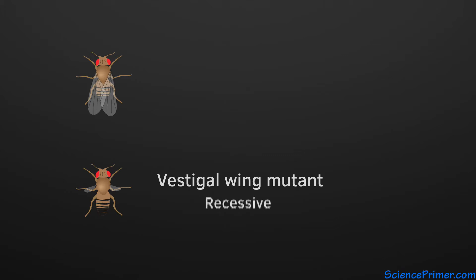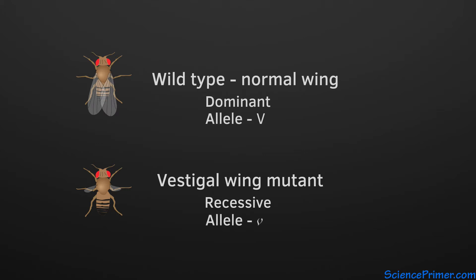Presence of the wild-type allele allows an individual to form normal wings. Since the gene's name is vestigial wing, the dominant wild-type allele is identified with a capital V, and the recessive mutant allele with a lowercase v. Since the lowercase v allele is recessive, the only genotype that will cause the mutant phenotype is the homozygous recessive, or little v little v.